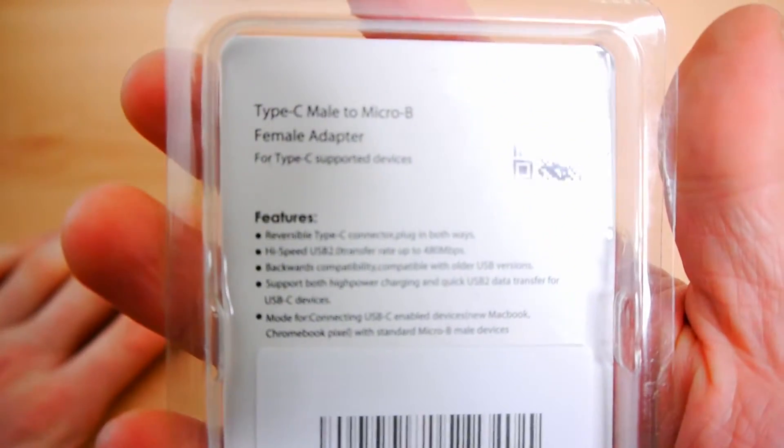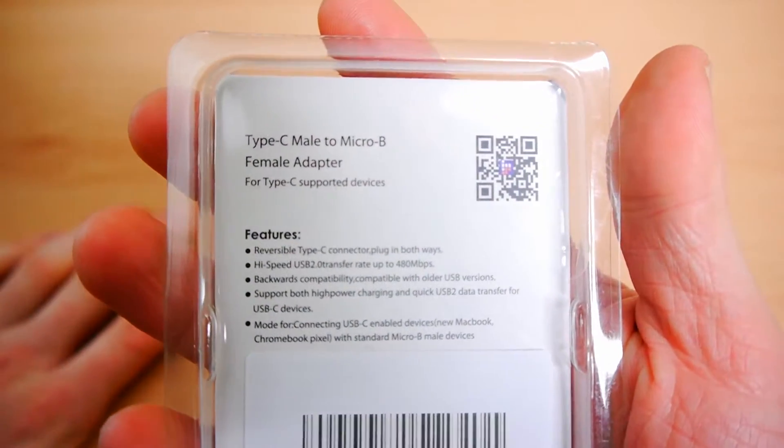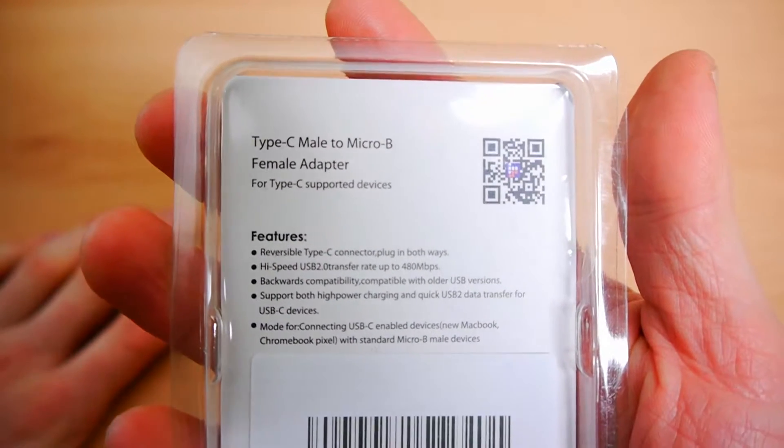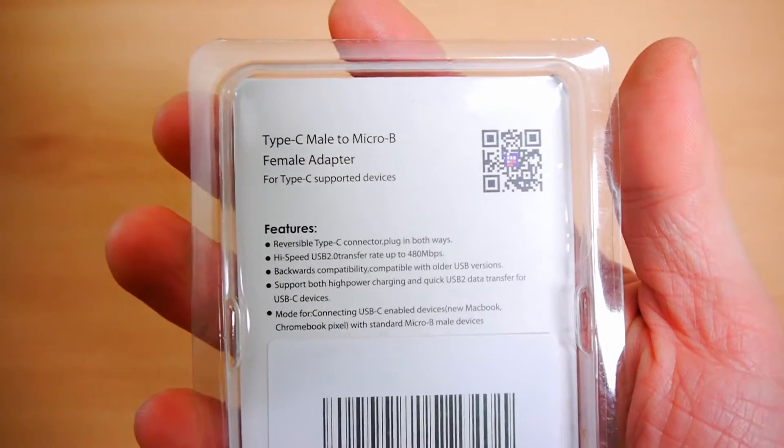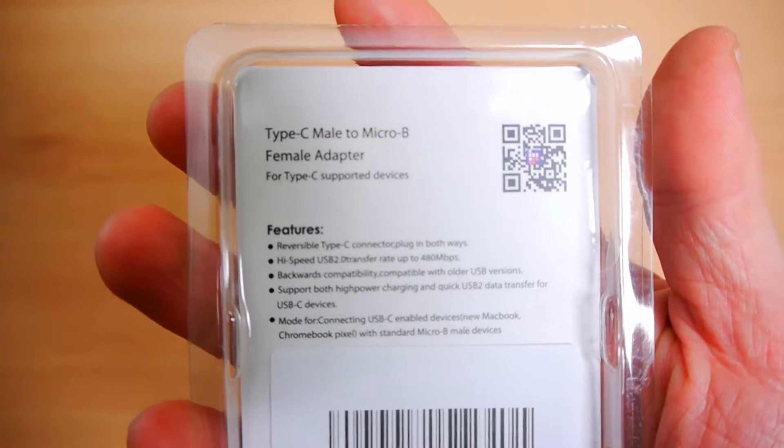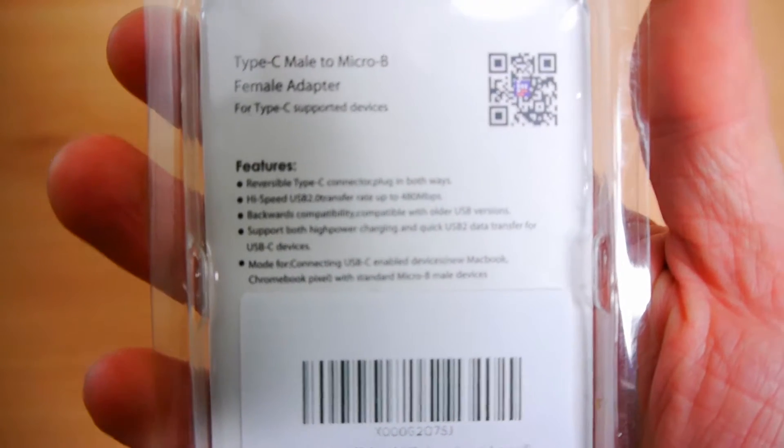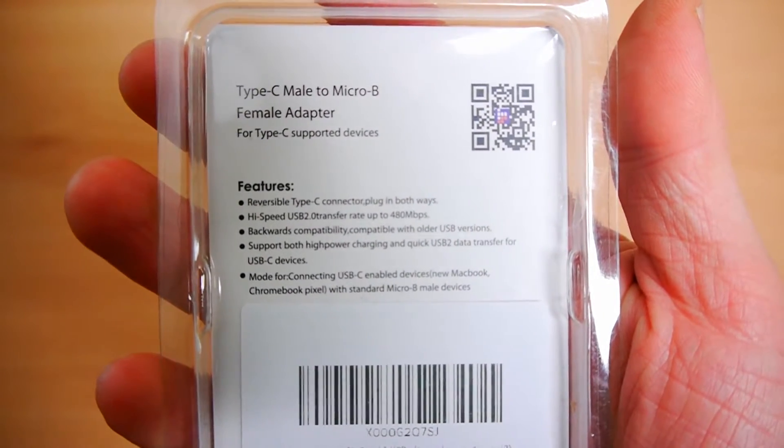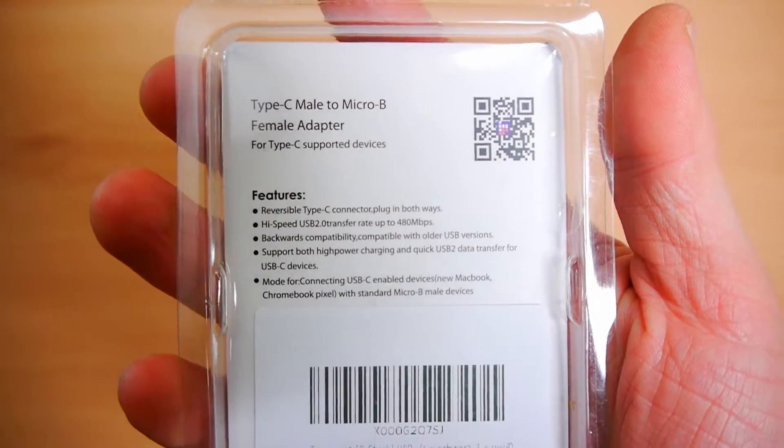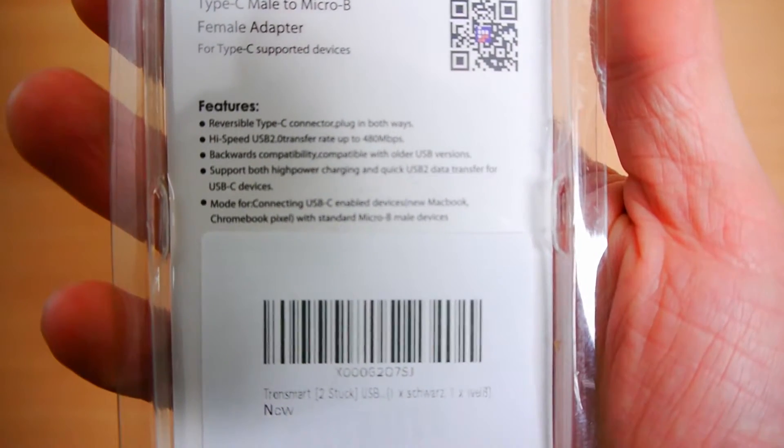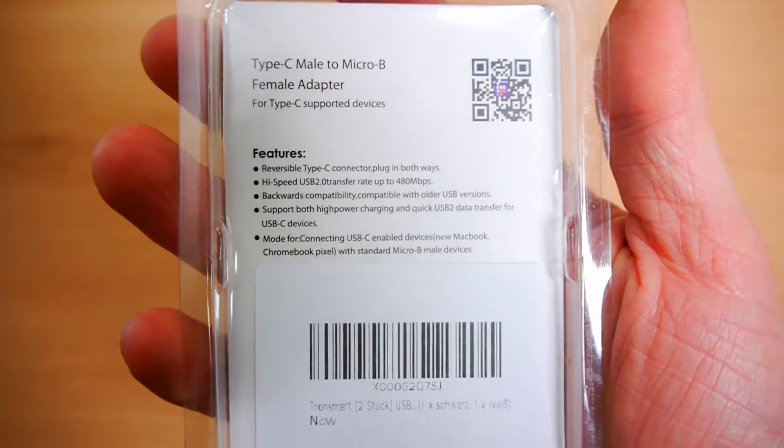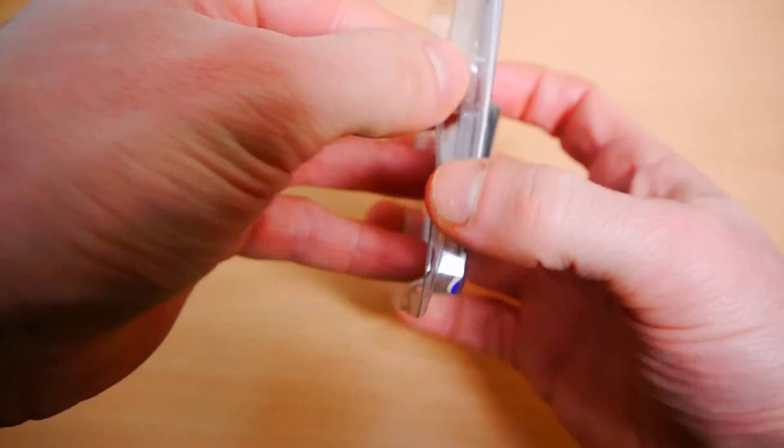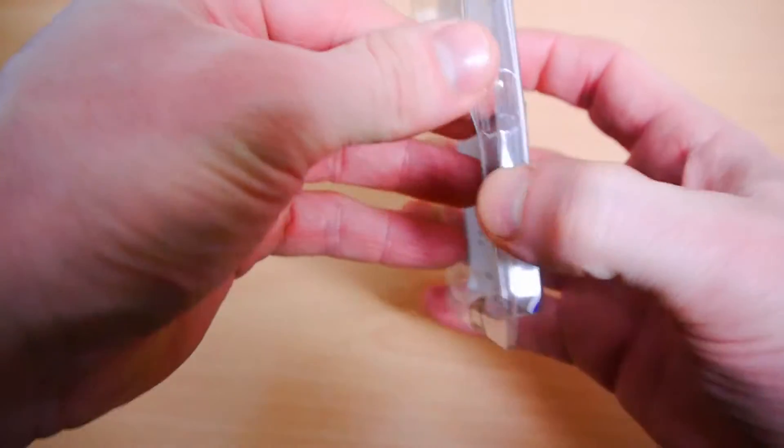So I'll just quickly show you the back of the box. It's a reversible Type-C connector plug. High-speed transfer rate up to 480 megabytes per second. It's backwards compatible. And it supports high-power charging and quick USB 2 data transfer for USB-C devices. I can't read what it says at the bottom. Made for connecting USB devices, MacBook, Chromebook, Pixel, the standard micro B male devices. I apologize for speaking like an idiot there, but it's hard for me to read that through the camera.